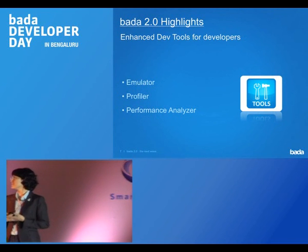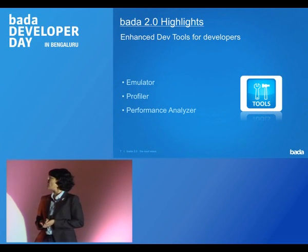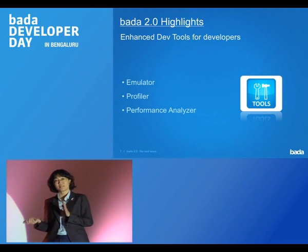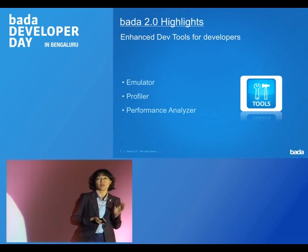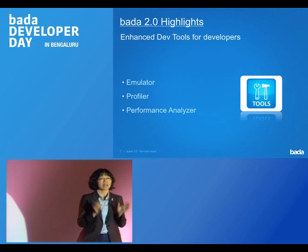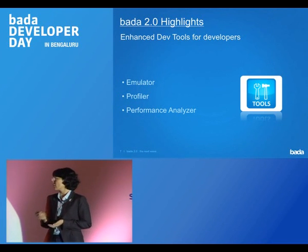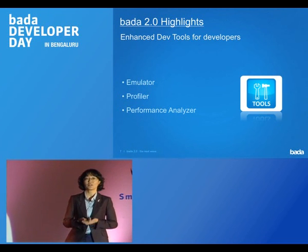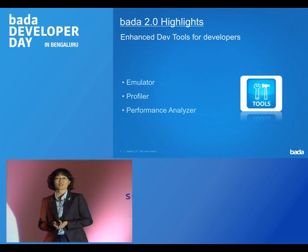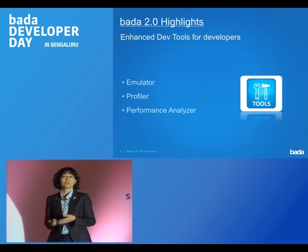Let's talk about the development tools. I believe these useful tools will give you a helping hand. First, Bada 2.0 provides an emulator that shows similar behavior to the real hardware device, minimizing the well-known device behavior discrepancy problem, so you invest less time tuning your application and can develop more easily and quickly. We also provide a profiler to check the bottleneck of your application, and a performance analyzer to check your application's resource usage — such as file, database, and memory. These tools will substantially help you optimize your applications.